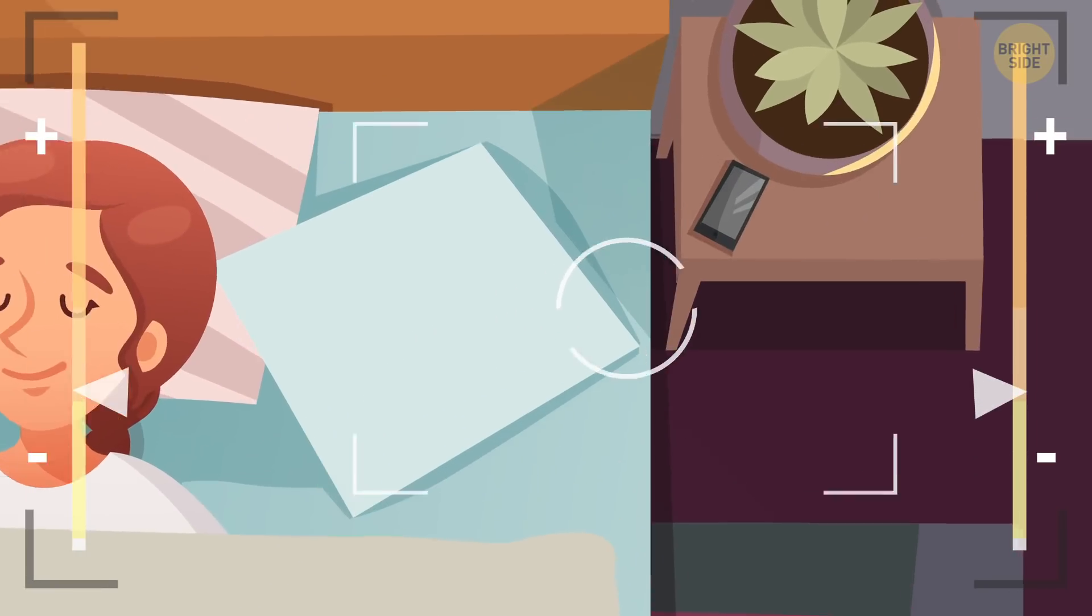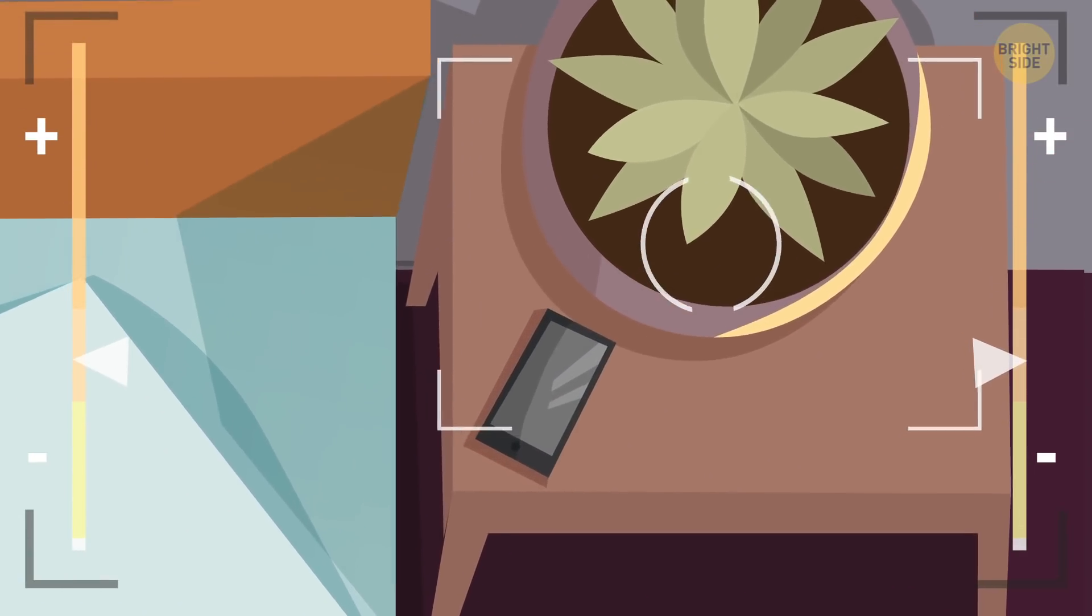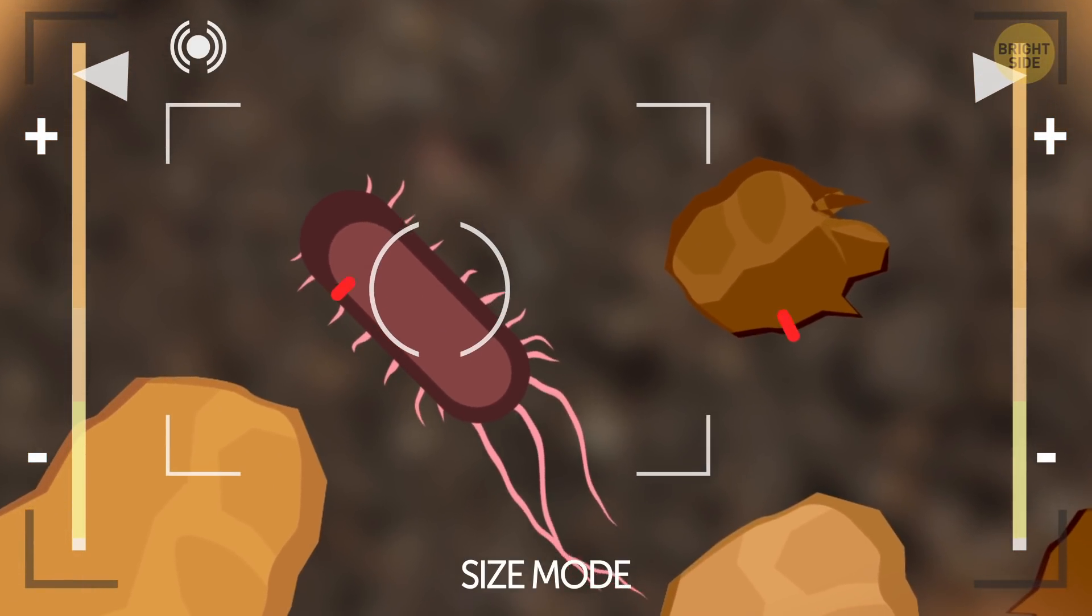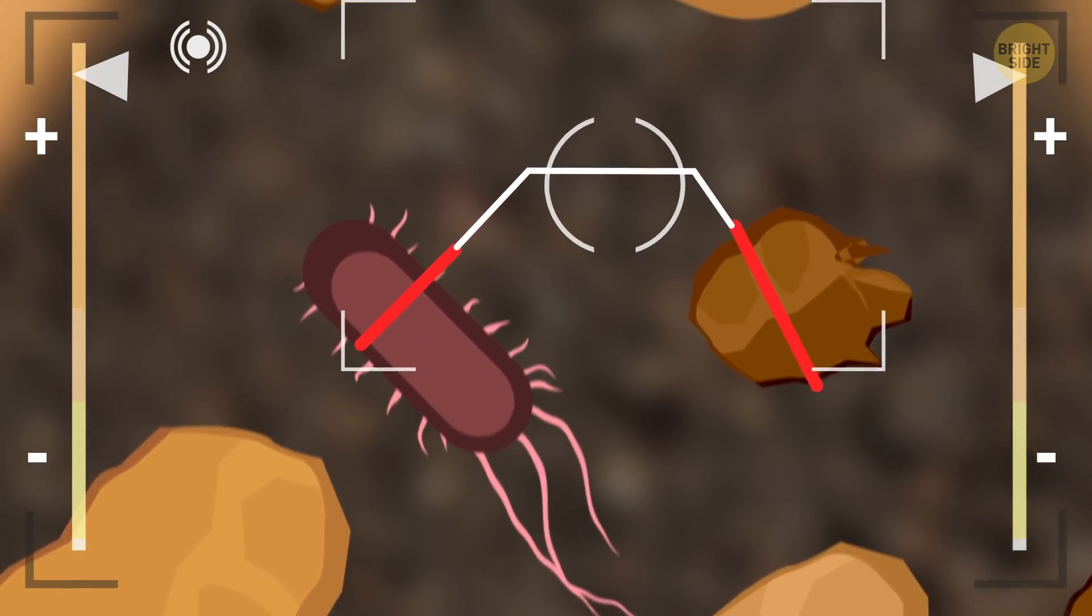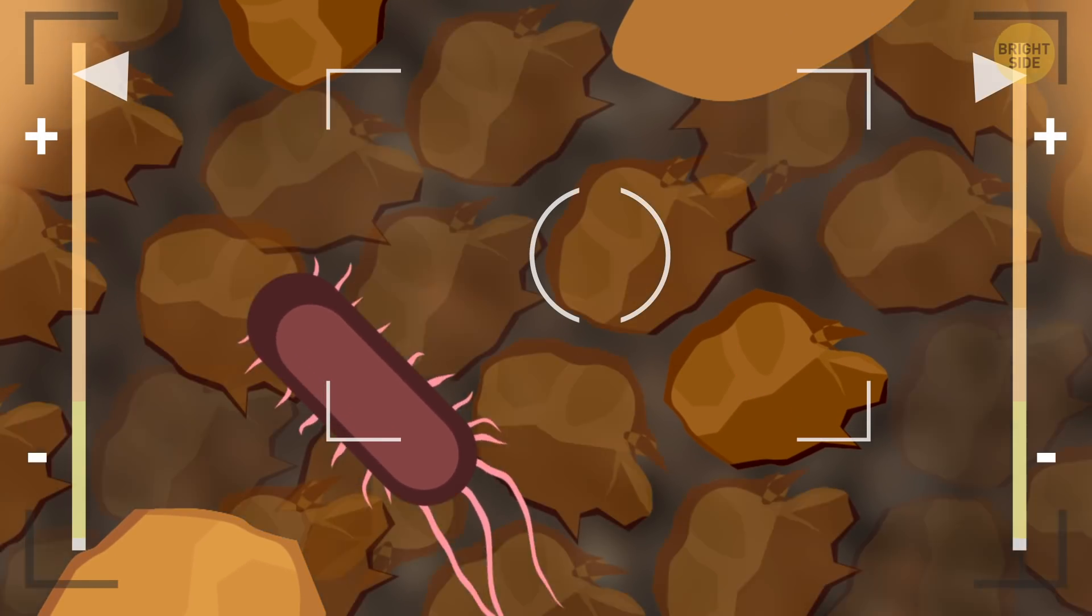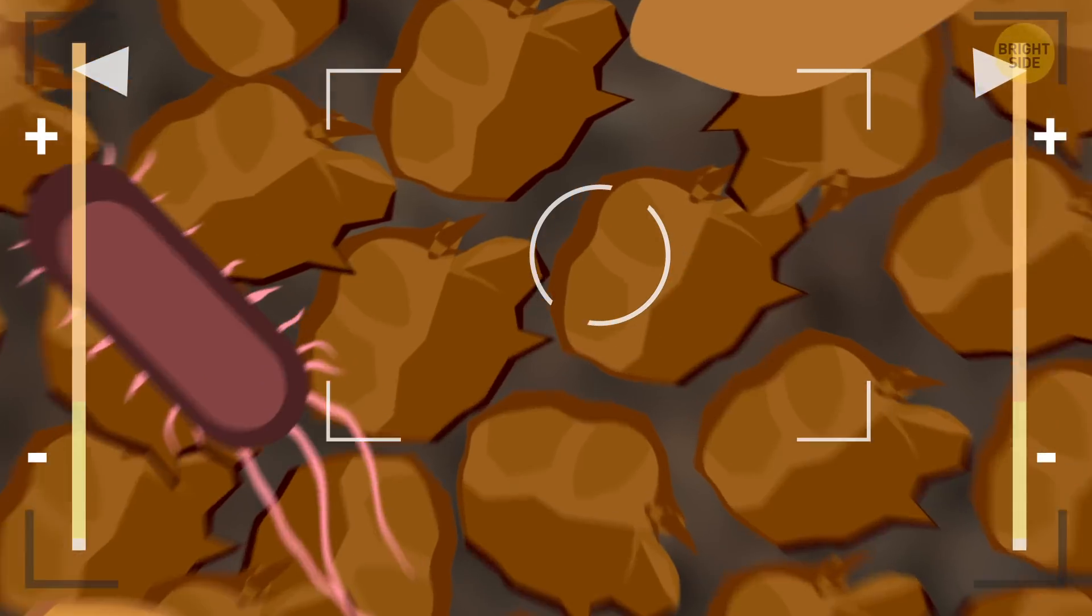Two things that are similar in size, and you won't believe it – a clay particle and an E. coli microbe. And they're both 2 micrometers in diameter. This tiny size explains why clay doesn't let water through it. The distance between its particles is just too small, and they cling together.